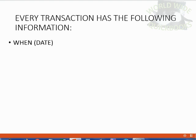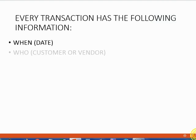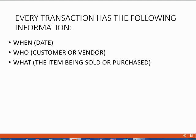Every source document has the same fields of information that are on every single transaction. Every single transaction has a date when the event happened, a person or a company involved in the transaction, an item of product or service that's being sold or purchased, and a money amount. These are all things that must be written on the document regardless of what type of transaction or what type of document you're making as proof of the transaction.